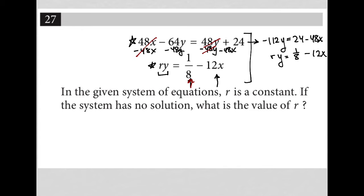Let's read the question to see what it wants us to do. It says: in the given system of equations, r is a constant. If the system has no solution, what is the value of r? In order for a system to have no solution,